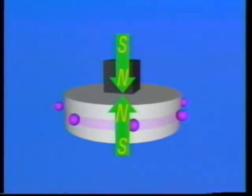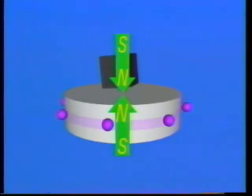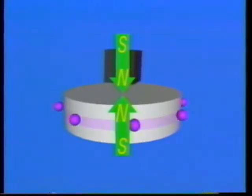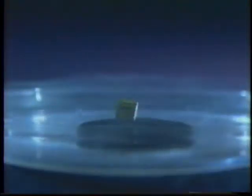The magnetic field created by the superconducting current opposes the field of the permanent magnet, just as two bar magnets oppose one another when like poles are brought together. The resultant force is strong enough to propel the magnet into the air above the disk.